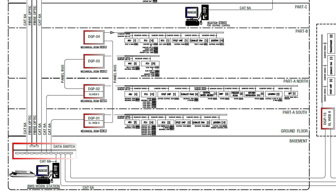This data switch is connected to the BMS workstation where we can see all the graphics and manage the complete system. Here you can see we have CAT6 cables and fiber optic cables. CAT6 cable can go up to a distance of 90 meters only, so for DDCs located far away we pulled fiber optic cables for those DGPs.